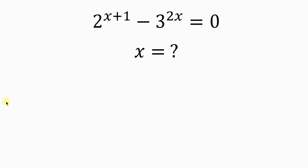What's going on everybody? Welcome back to my YouTube channel. Let's solve this math question that says: find the value of x for which 2 to the x plus 1 minus 3 to the 2x is equal to 0.